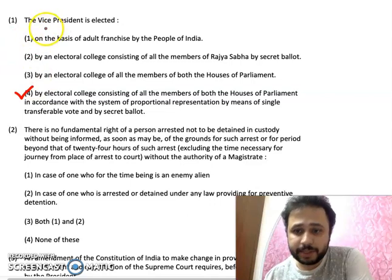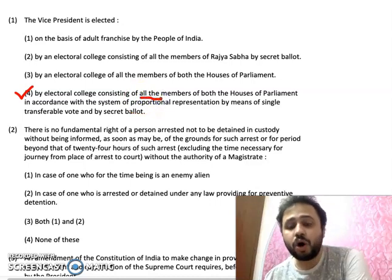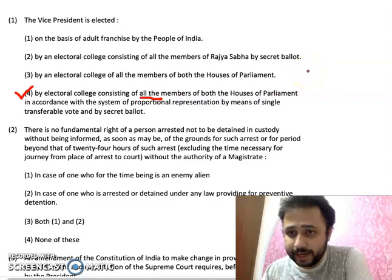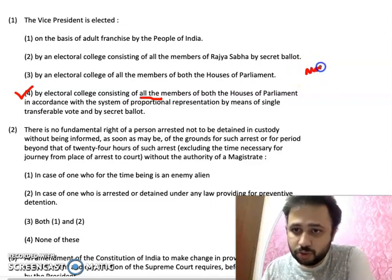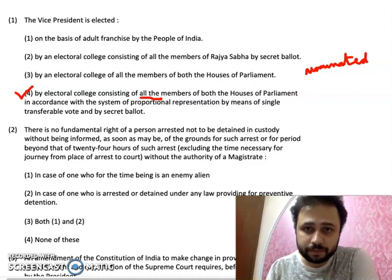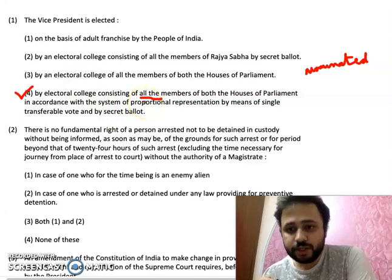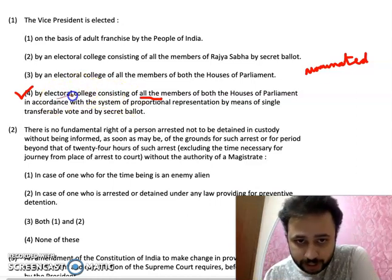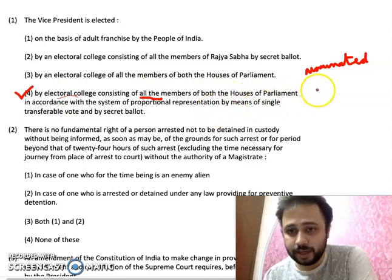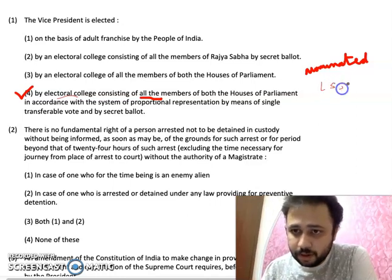The important thing is that the Vice President is elected by an electoral college consisting of all the members. This point is important — all the members includes both elected members and nominated members. So it includes nominated members and elected members both. In the election of Vice President, we require all the members including nominated and elected members of Lok Sabha and Rajya Sabha.